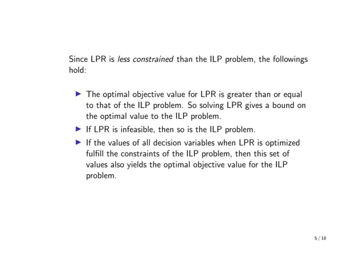Since the LP relaxation is a less restricted problem than the ILP problem, the following properties hold immediately. First, for maximization problems, the optimal value we obtain for the objective function for the LP relaxation will always be greater than or equal to that of the ILP problem. This is because, in general, the LP relaxation has a larger feasible region, and we may have a chance of obtaining a better value for the objective function. Therefore, the maximum value from the LP relaxation gives us an upper bound on the maximum value we expect from the ILP problem.